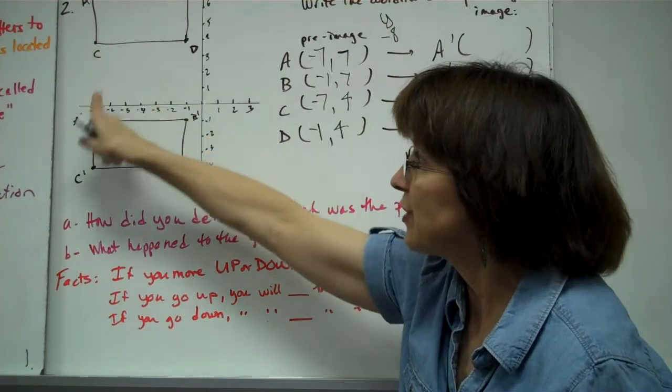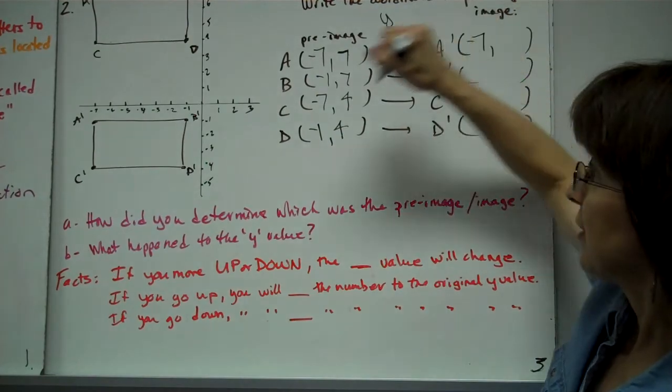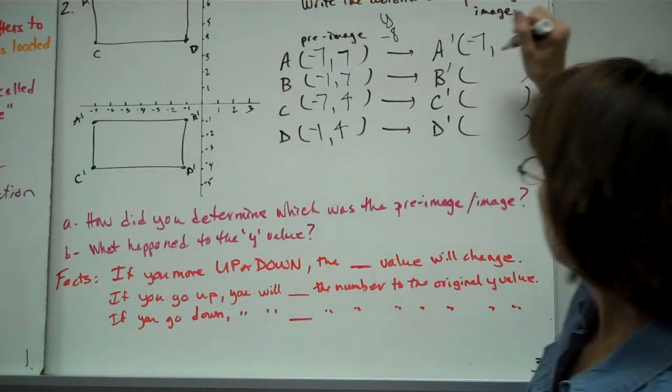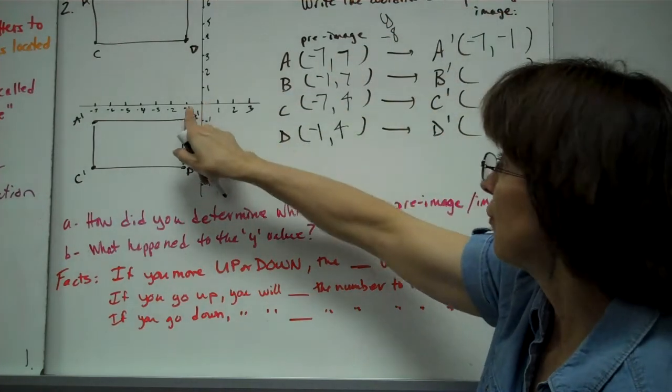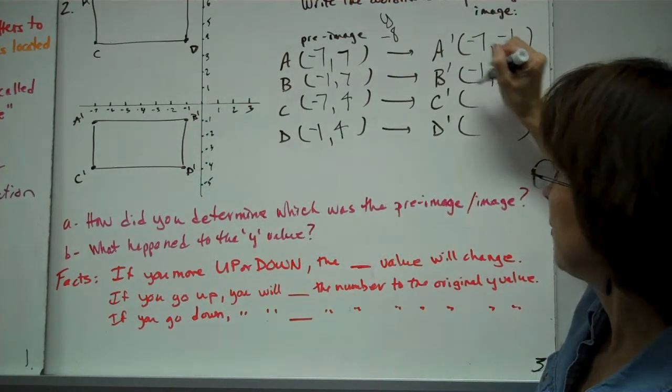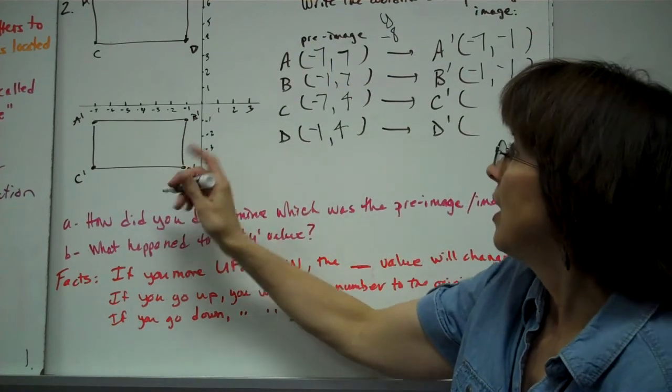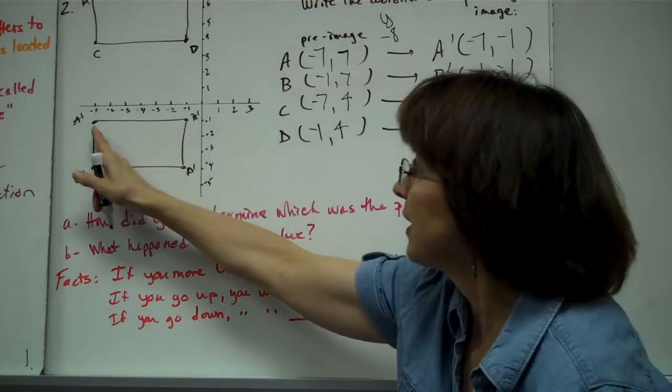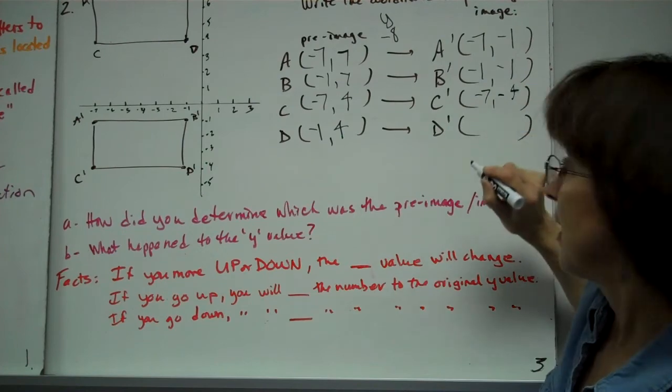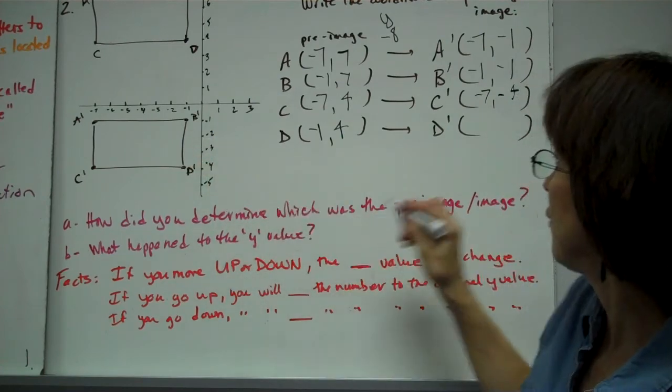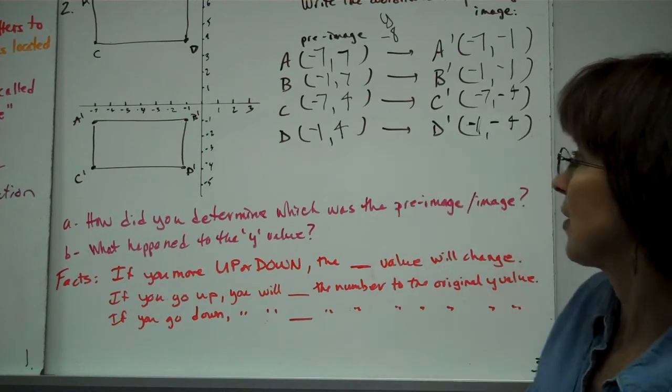My A prime is (-7,-1). My B prime is (-1,-1). My C prime is (-7,-4). And similarly with my D, I went over -1 and I went down to -4.